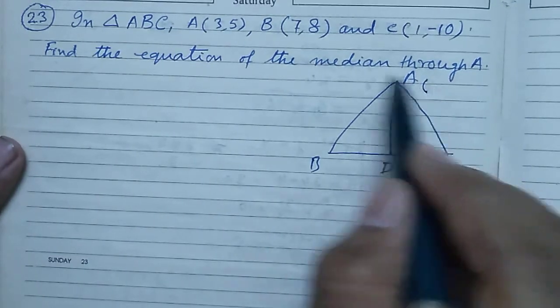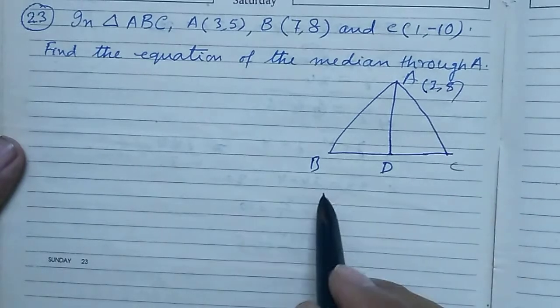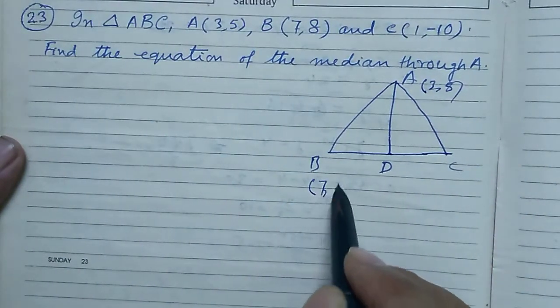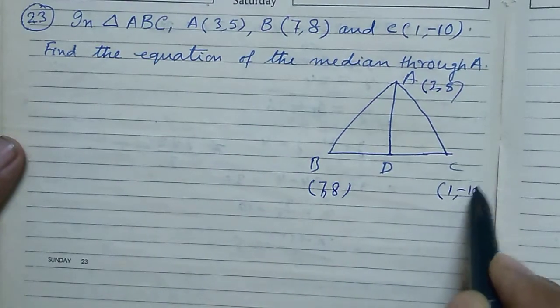To write: coordinate of A is (3, 5), B is (7, 8), C is (1, -10).